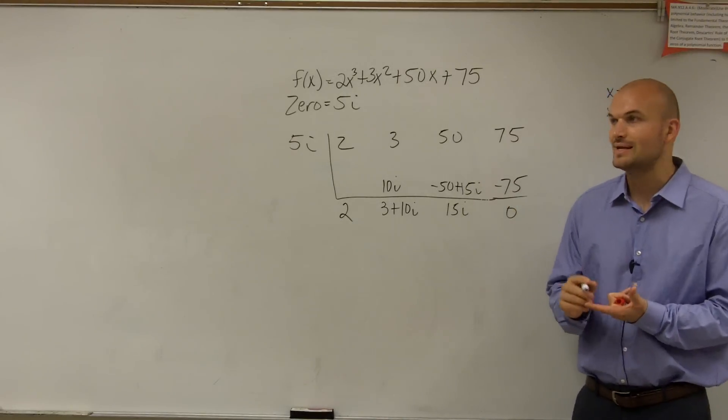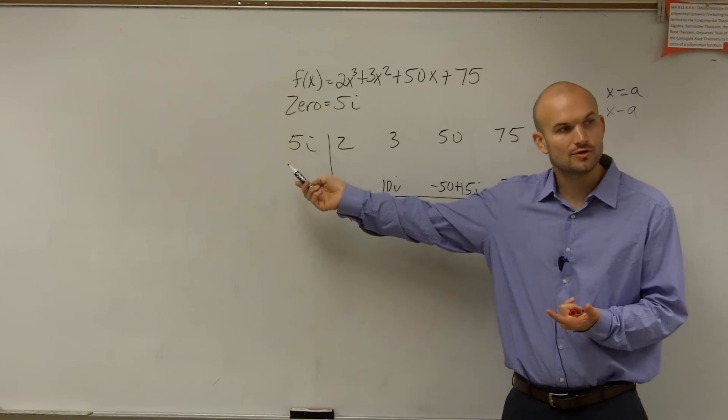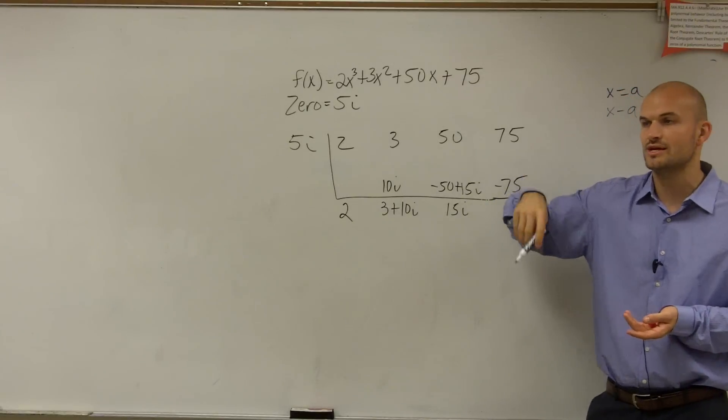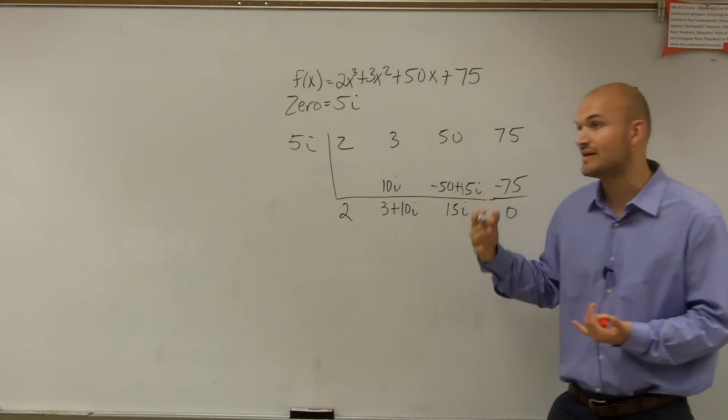Just like when we had square roots, when we have complex numbers, we have to include the conjugate. Because remember, to get complex numbers, we were saying that's the square root of negative 1. So your square root, you're going to have the plus or minus every single time.